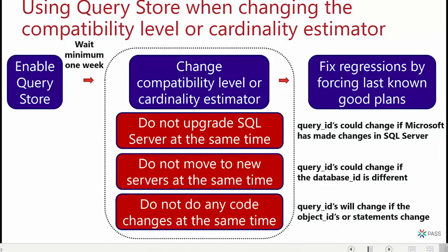If you're using the legacy cardinality estimator and want to change to a newer one: enable Query Store, let it run for some time, do the change, and if there are problems force the old plans for affected queries. Analyze further afterwards — maybe update queries or indexing — but as a temporary solution, forcing plans works. Just don't make other changes simultaneously when changing the compatibility level or cardinality estimator.